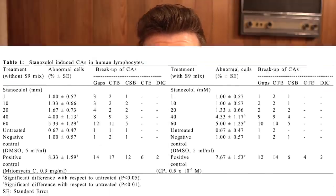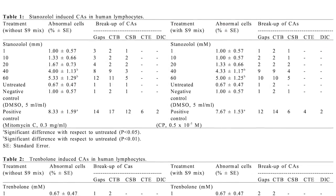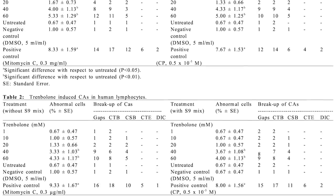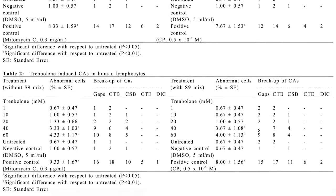Next, Winstrol and Trenbolone effects on the immune system. Winstrol and Trenbolone were found to be genotoxic and cytotoxic to human lymphocytes in a dose-dependent manner. In table one you can see stanozolol — Winstrol — induced chromosomal aberrations in human lymphocytes, with abnormal cells increasing in a dose-dependent manner. Table two shows Trenbolone induced chromosomal aberrations in human lymphocytes, again with abnormal cells increasing in a dose-dependent manner.